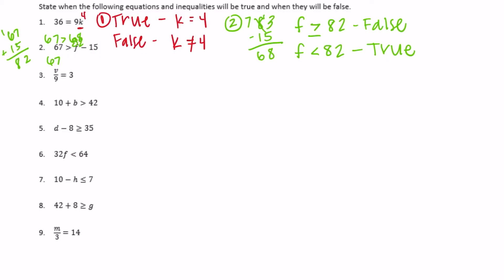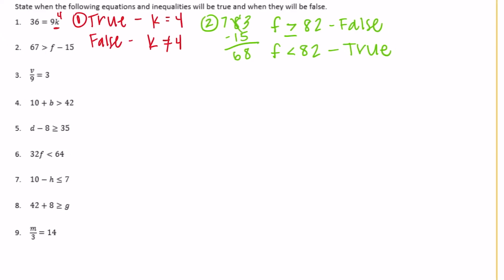Number three: v over 9 is equal to 3. What divided by 9 is equal to 3? That would be 27. So when it's true, v needs to be equal to 27. For it to be false, v needs to be anything other than 27.